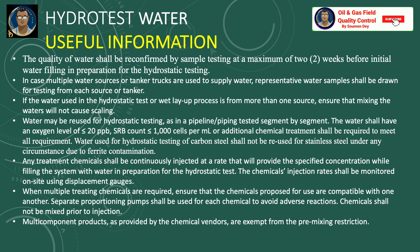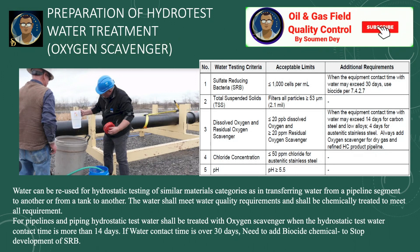Any treatment chemicals shall be continuously injected at a rate that will provide the specific concentration while filling the system with water in preparation for the hydrostatic test. The chemical injection rates shall be monitored on site using displacement gauges. When multiple treating chemicals are required, ensure that the chemicals proposed for use are compatible with one another. Separate proportioning pumps shall be used for each chemical to avoid adverse reactions, and chemicals shall not be mixed prior to injection.